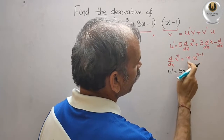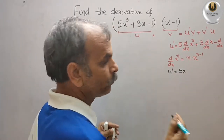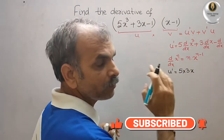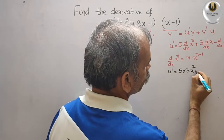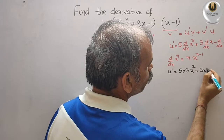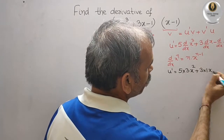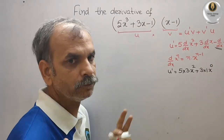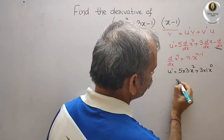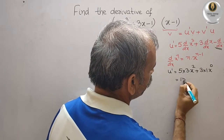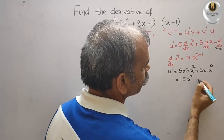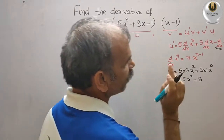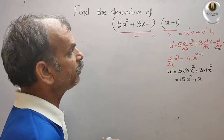Solving this, u dash equals 5 times 3 times x to the power of 3 minus 1, plus 3 times 1 times x to the power of 1 minus 1, and the constant term gives 0. So u dash equals 15x² plus 3. Now we will go for v dash.